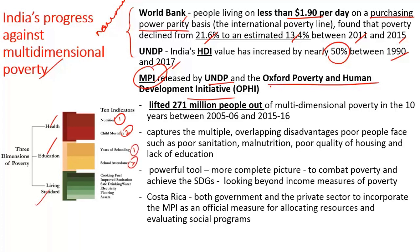Under living standards, there are six indicators: cooking fuel, improved sanitation, safe drinking water, electricity, flooring, and assets. This multi-dimensional poverty index is a powerful tool that gives an all-encompassing, complete picture to combat poverty. It will also help in achieving a goldilocks situation for India by achieving the Sustainable Development Goals, as it looks beyond income measures of poverty.